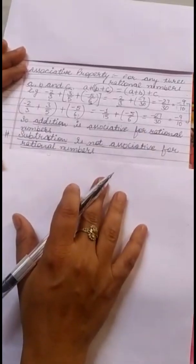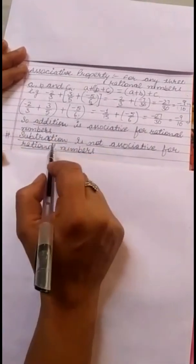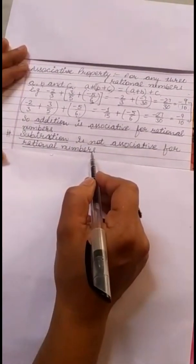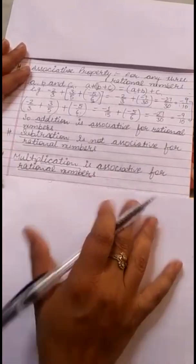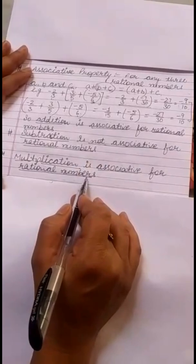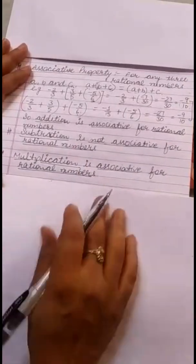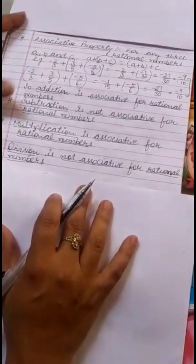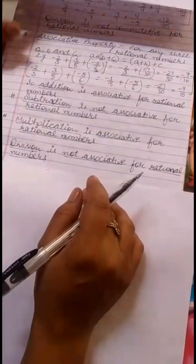Now, what about subtraction? Similarly to commutative property, subtraction is not associative for rational numbers — you can prove it by taking examples. Multiplication is associative for rational numbers; you can take examples of your choice to prove the same. Similarly, as with commutative property, division is not associative for rational numbers.